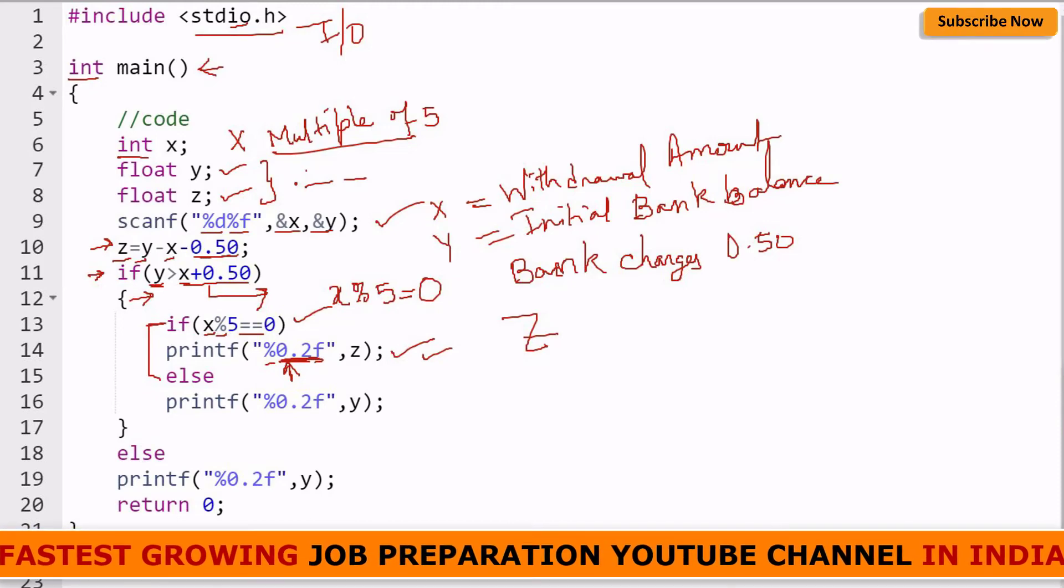You should be precise with this condition, otherwise your hidden test case won't satisfy. If x is not a multiple of five, it will come to the else and print the initial bank balance. Here also I have mentioned 0.2f to get the two decimal places. If the outer if becomes false, it will directly come to the else and print y again.